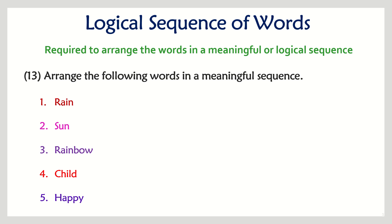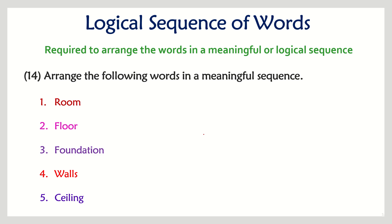Next question: rain, sun, rainbow, child, and happy — a sequence of activity. First comes rain, then the sun comes out. When rain and sun come together, a rainbow is formed. Once a rainbow is formed, the child sees it and becomes happy. So it's directly 1, 2, 3, 4, 5.